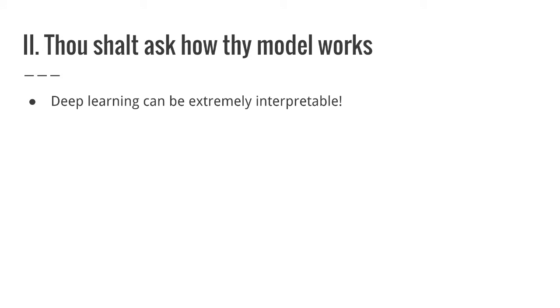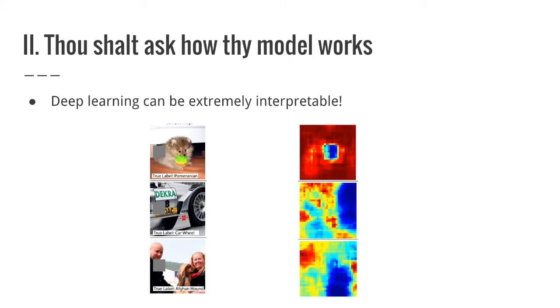So lesson two, in contrast to the other one, thou shalt ask how thy model works. A very popular myth is that neural networks are not interpretable. And I feel like that couldn't be further from the truth. I've never had a machine learning model that I felt was as interpretable as a deep network is. There's a lot of really awesome techniques for this. There are black box techniques. So this has nothing to do with neural networks. Any kind of good enough classifier you can make into a pretty good visualization to how it works.